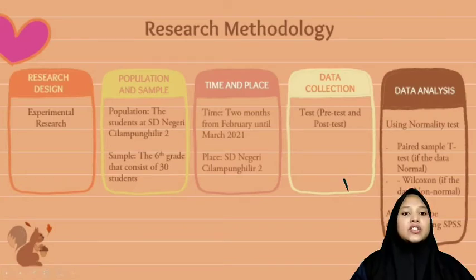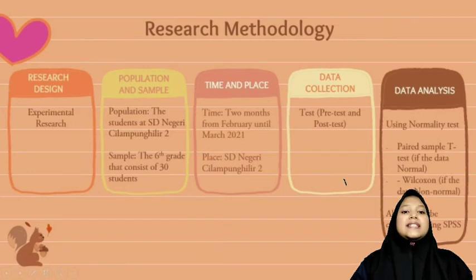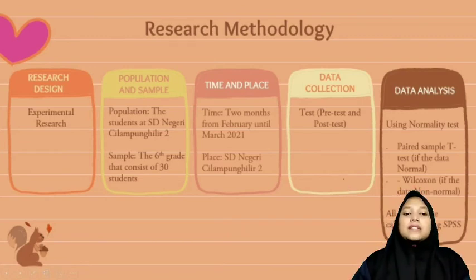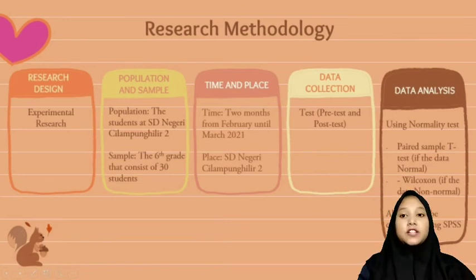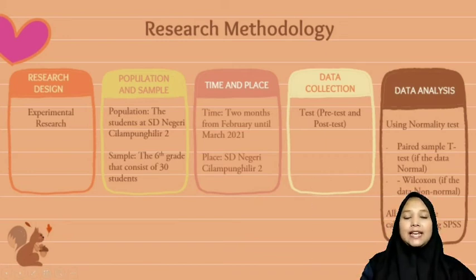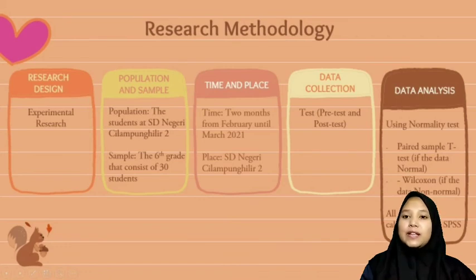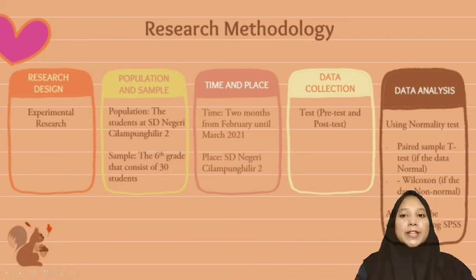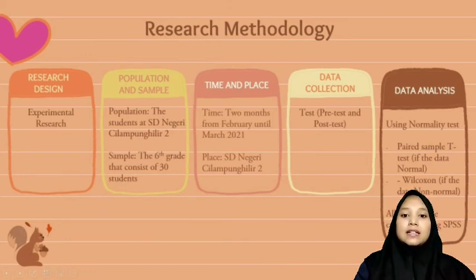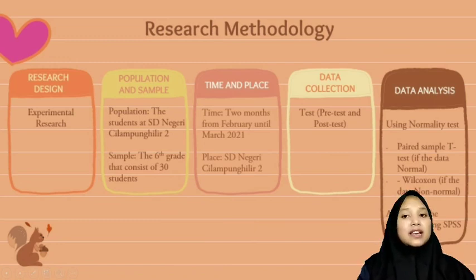Now the last point is research methodology. The first is research design. This study is classified as an experimental design because it involves little or no control of extraneous variables. In the one-group pretest post-test design, a single group is measured or observed not only after being exposed to a treatment but also before. The second is population and sample. The population is the students at SD Negeri Celampung Hila Dua, located in Tasikmalaya district. The sample is the sixth grade, consisting of 30 students — 21 girls and 11 boys. The third is time and place. The time will be 2 months, from February until March 2021, and the place is SD Negeri Celampung Hila Dua.